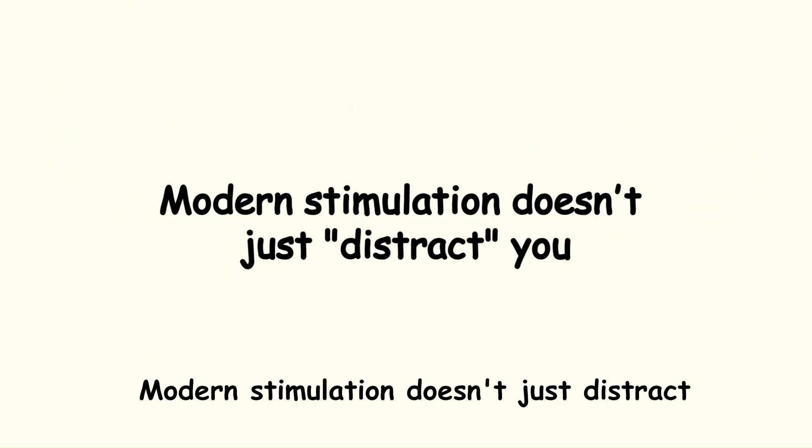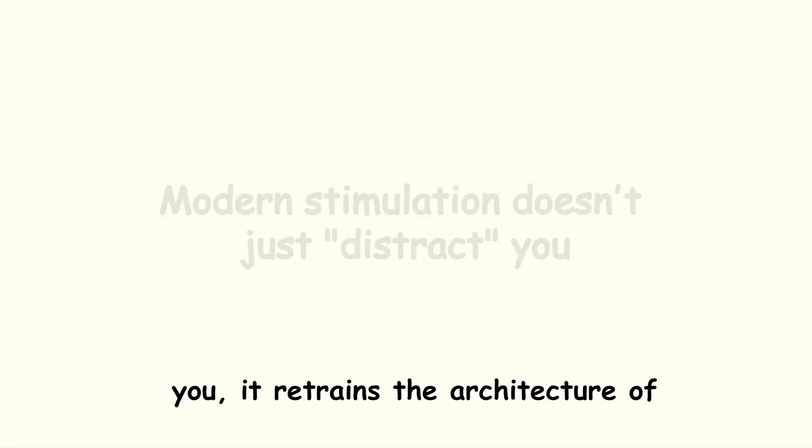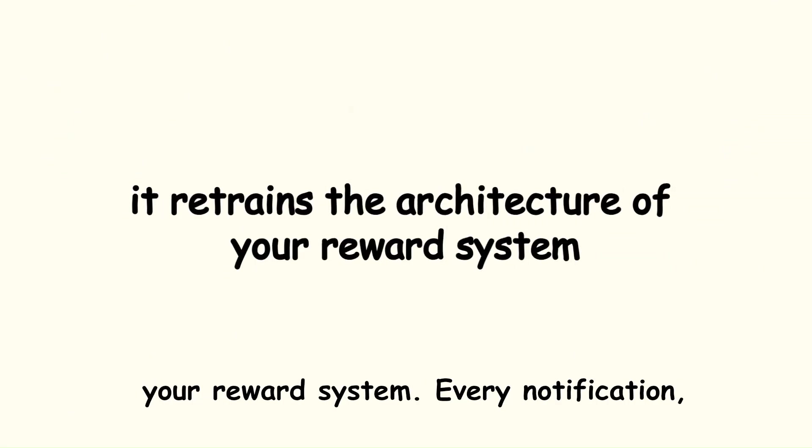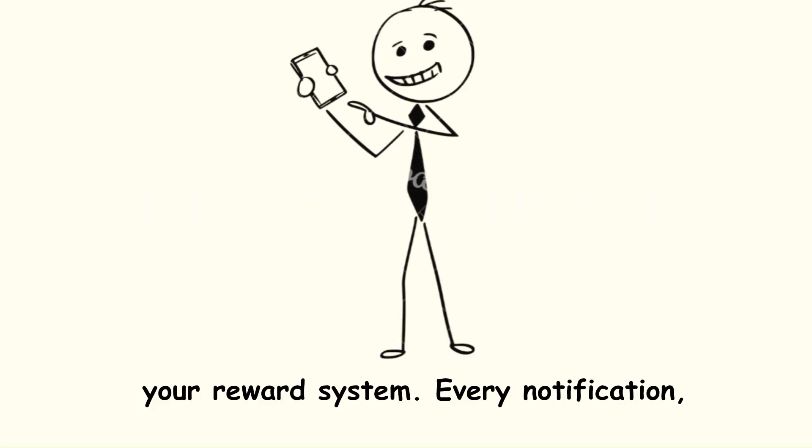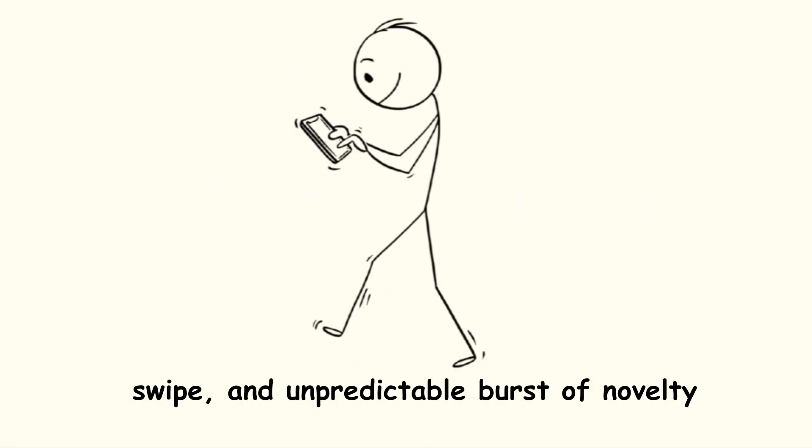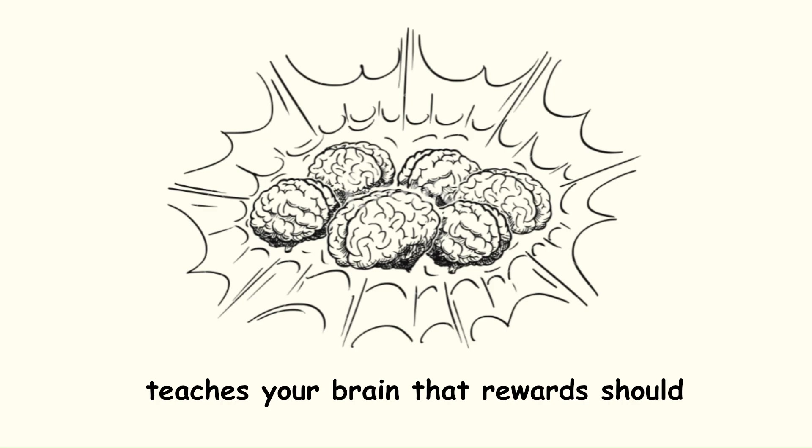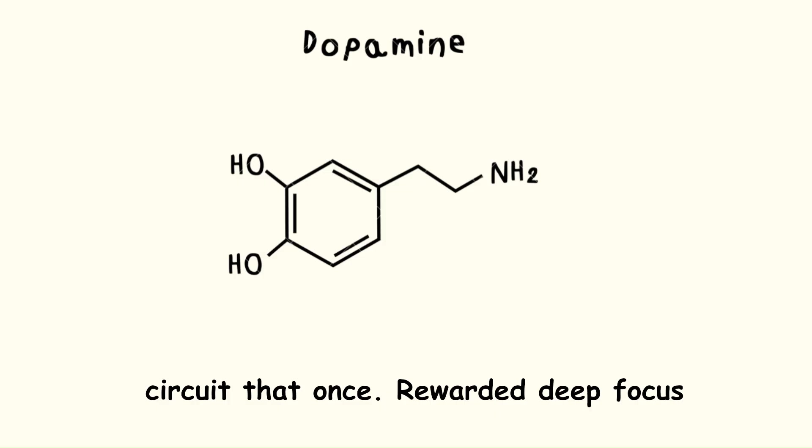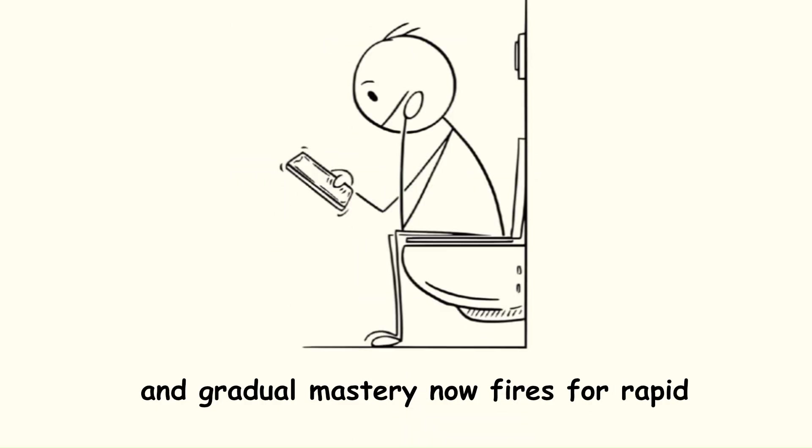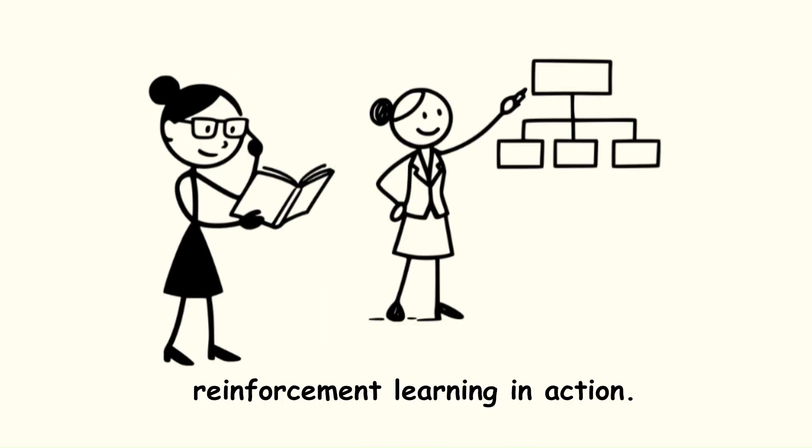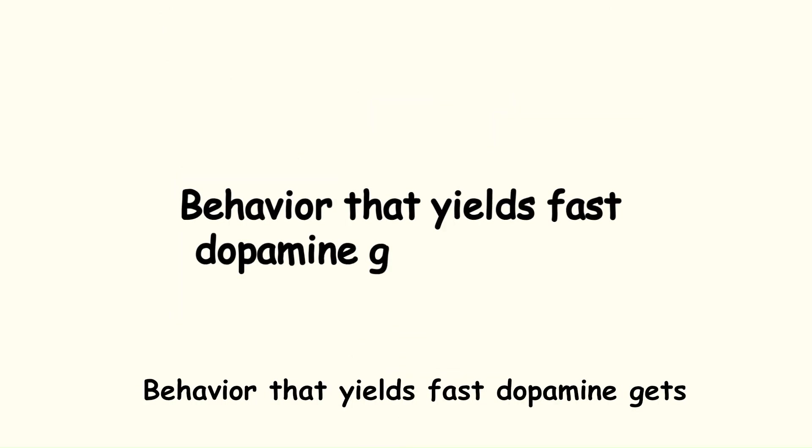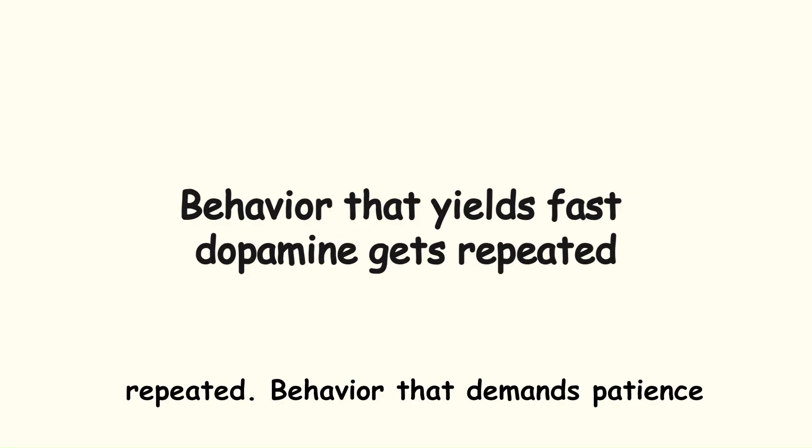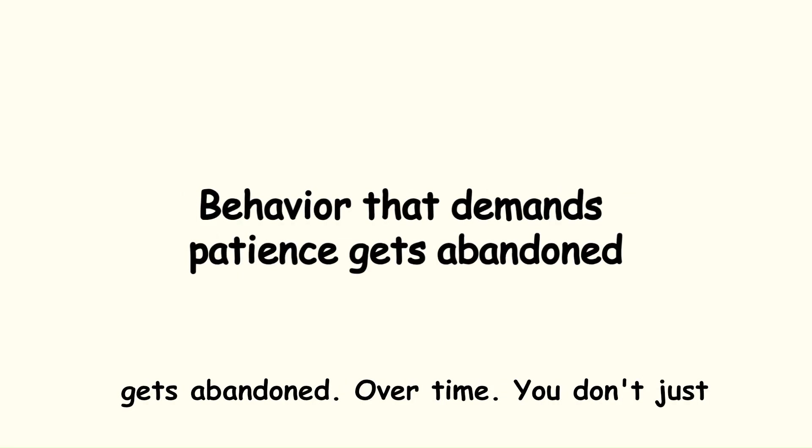Modern stimulation doesn't just distract you, it retrains the architecture of your reward system. Every notification, swipe and unpredictable burst of novelty teaches your brain that reward should be immediate, varied and effortless. The circuit that once rewarded deep focus and gradual mastery now fires for rapid consumption and minimal friction. This is reinforcement learning in action. Behavior that yields fast dopamine gets repeated, behavior that demands patience gets abandoned.